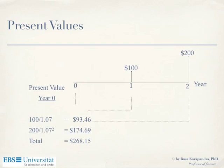So if I offer you $268.50 today, or $100 in a year from now and $200 in two years from now, you are indifferent. Because with $268.50, you can put $93.46 in a bank for one year to get $100, and $174.64 for two years to receive exactly $200. No matter which one you have, you can replicate the other.